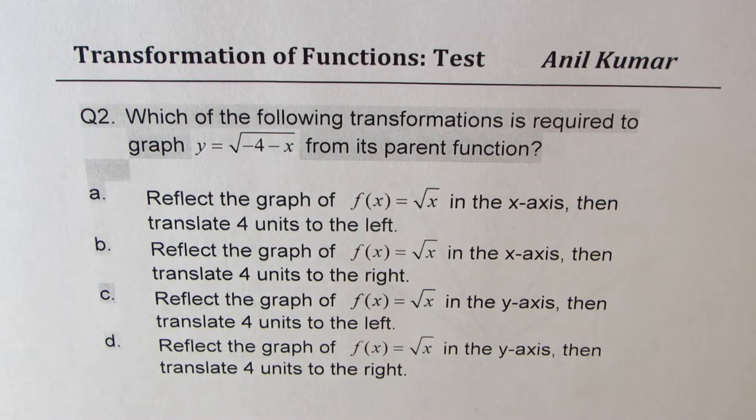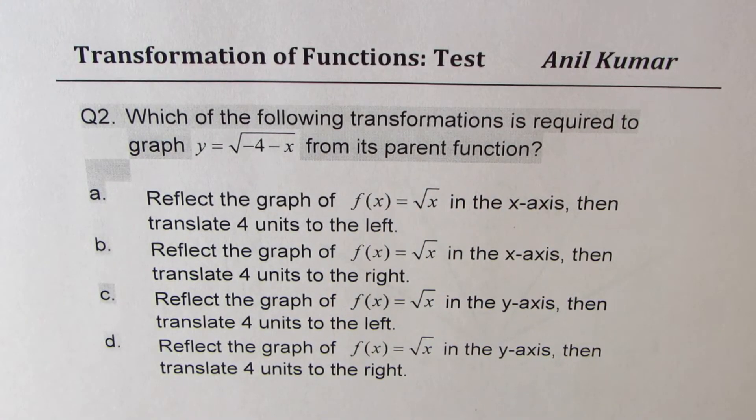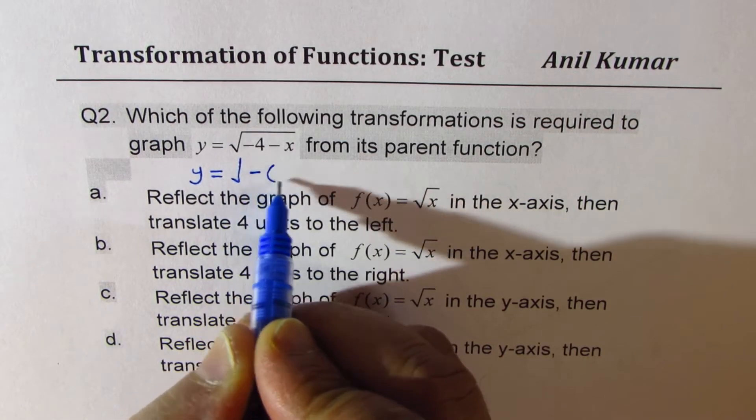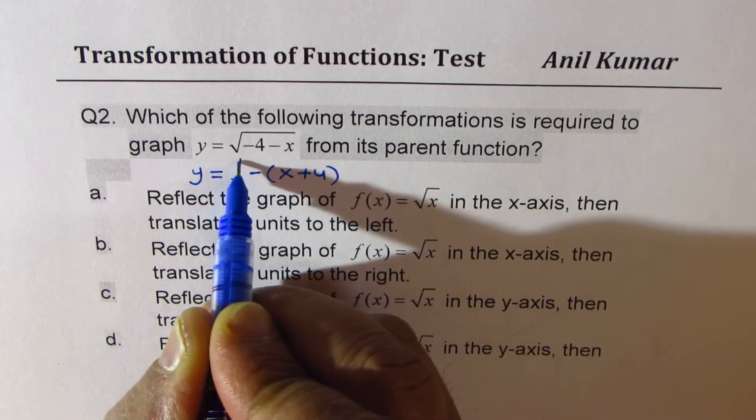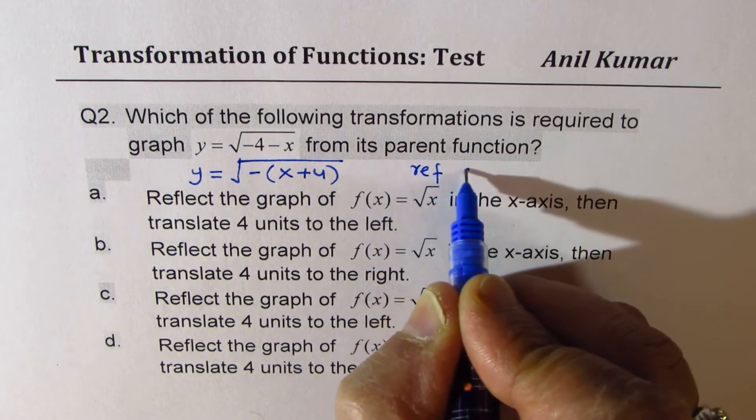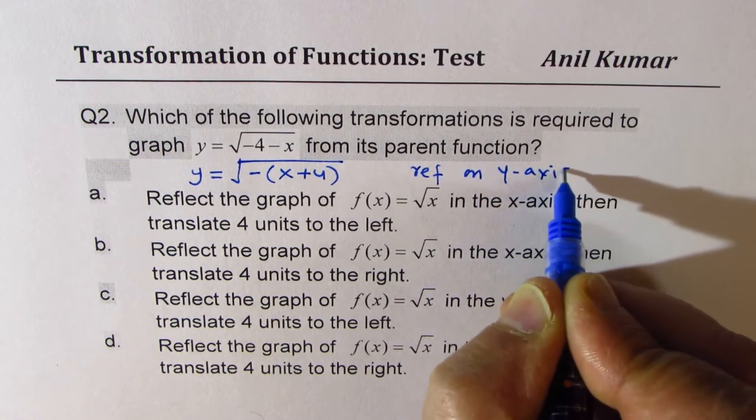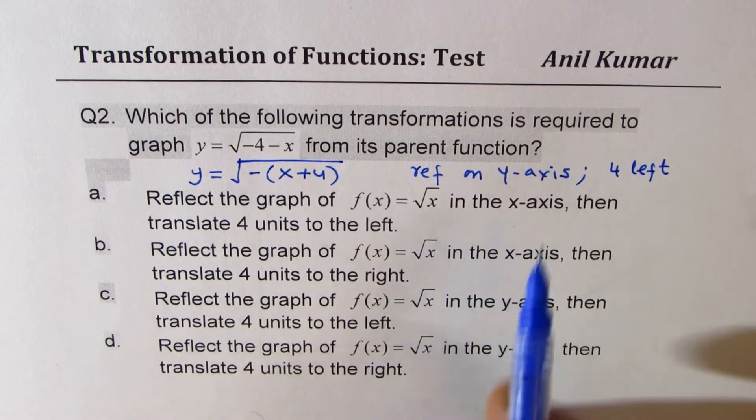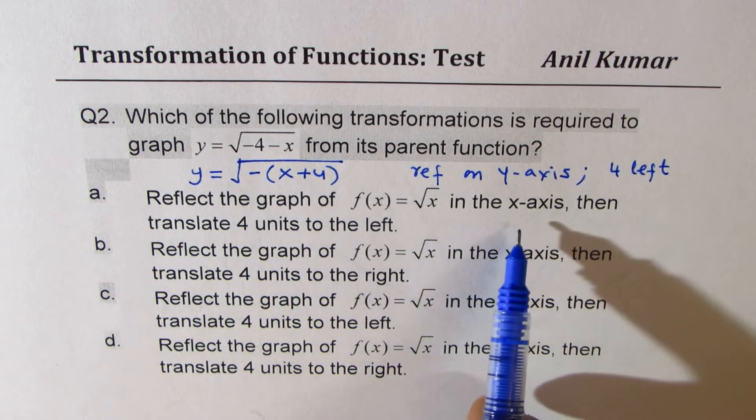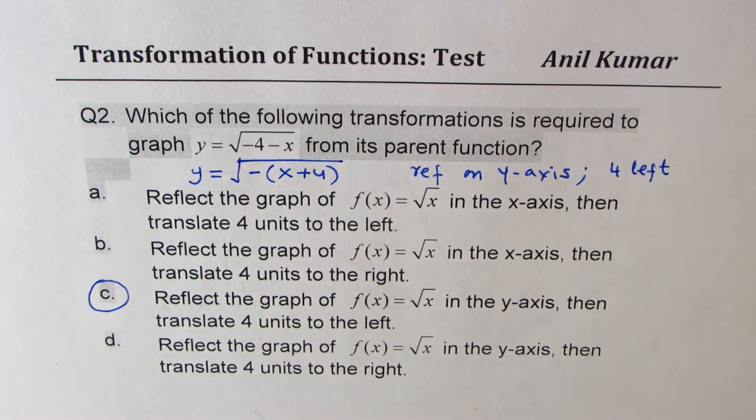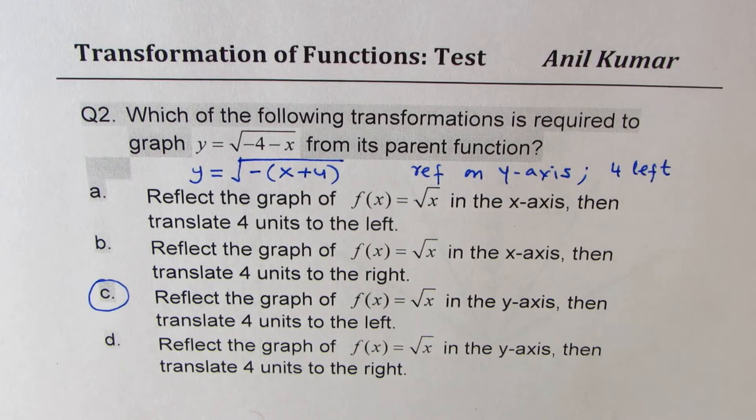Here is question number 2. Which of the following transformations is required to graph the given function? So first step is rewrite the function in standard form. We should take away this minus. So you could write this as x plus 4. Now we know what it is. That is reflection on y-axis. And this means 4 units left. So let's look for reflection on y-axis and 4 units left. So option c is the right option. That is how you're going to answer this question.